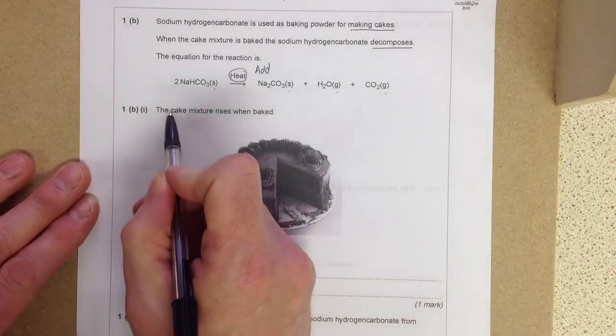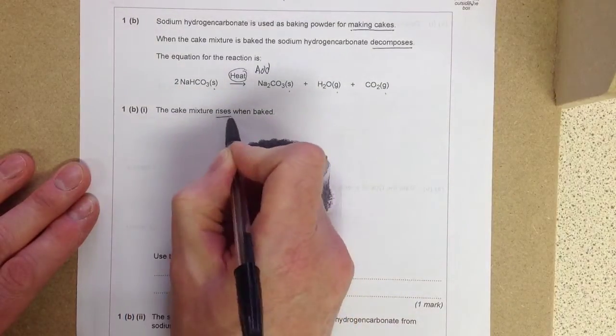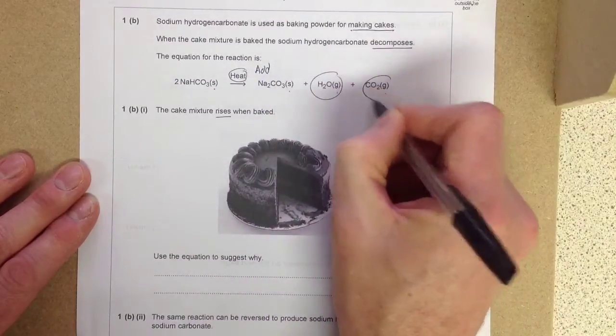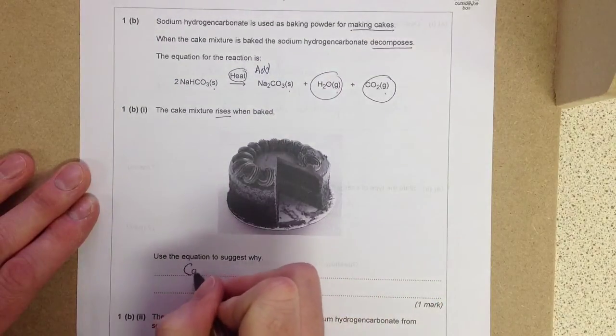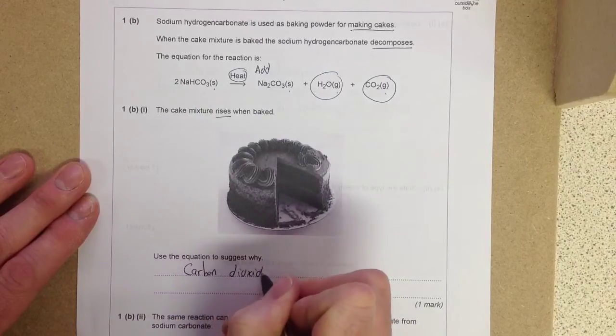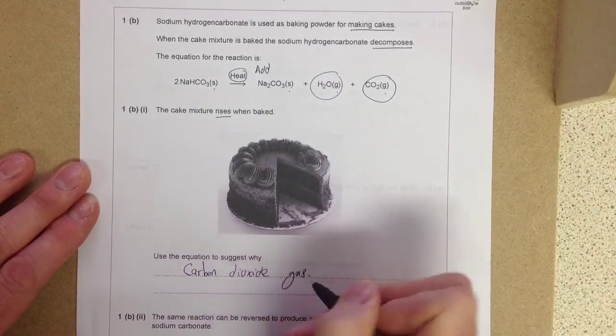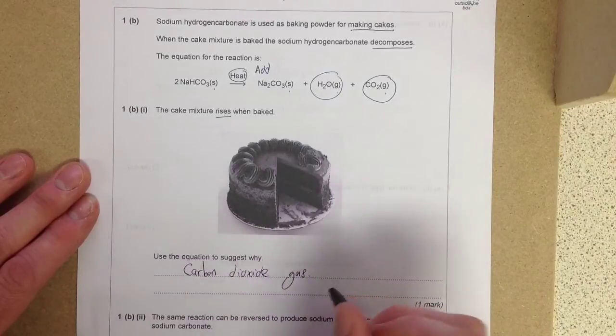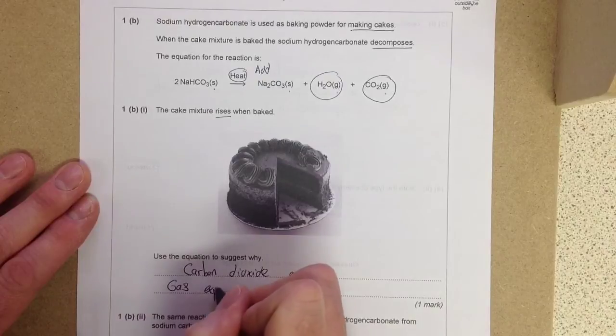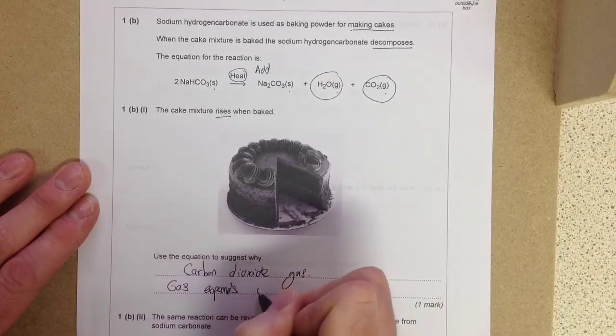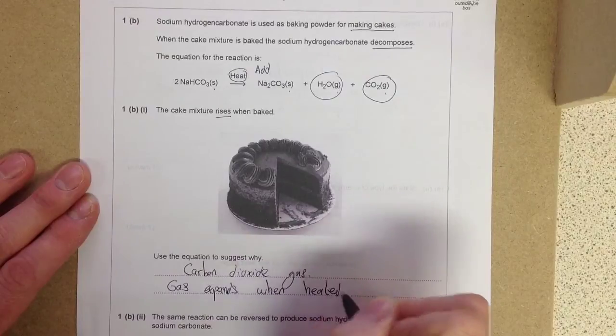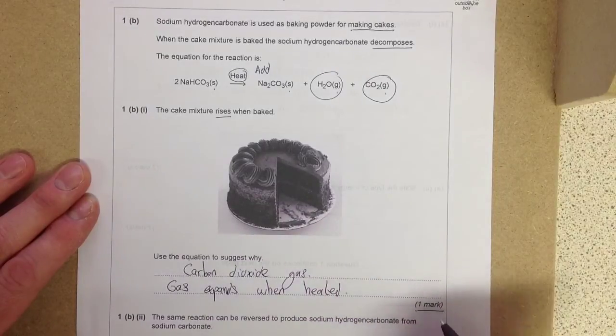The question down here comes from this bit. The cake mixture rises when baked, so the thing you've got to realize is these two bits. You're producing carbon dioxide gas. That will probably get you the marks, but just to make sure, you need to remember that gas expands when heated. That will guarantee that one mark.